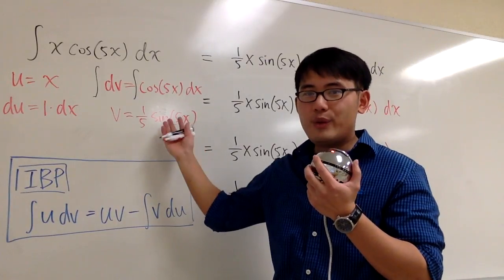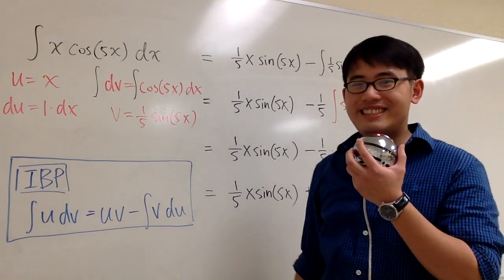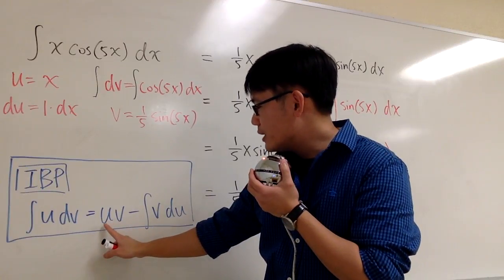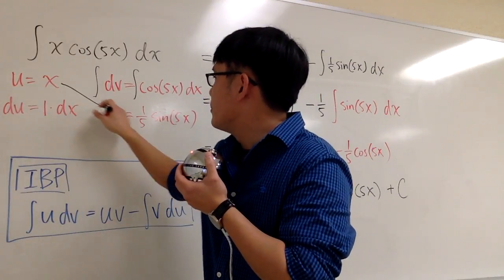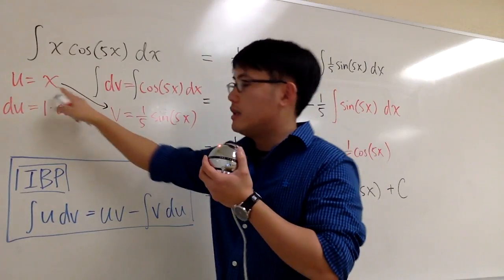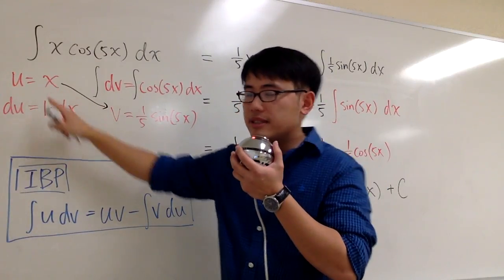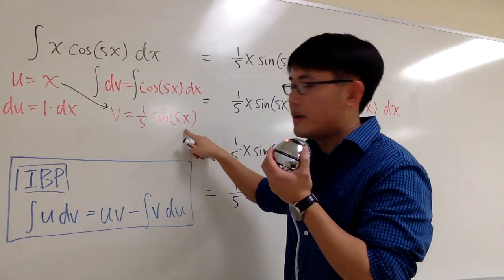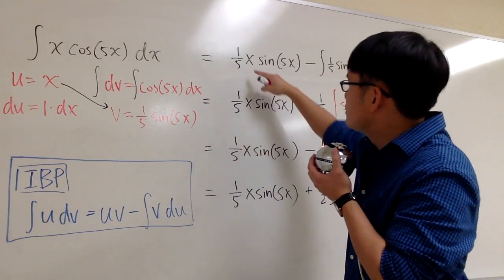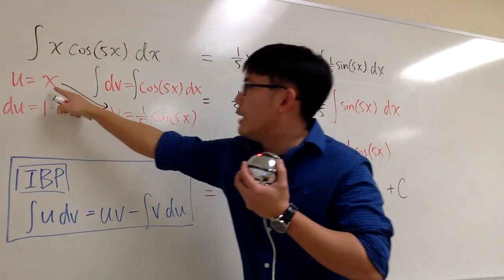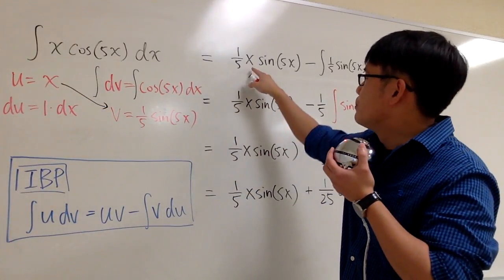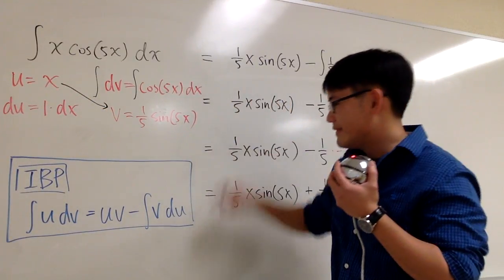Anyways, we have the ingredients to do the integration by parts. It says, I have to multiply u and v together. So, the u is x, I'm going to multiply by v, which is that. Namely, I'm multiplying x times 1 fifth sine of 5x. And I just put down 1 fifth x sine of 5x. I multiply these two together. I just put an x in the middle.